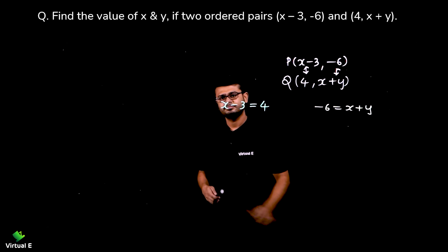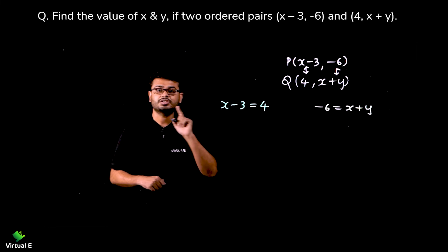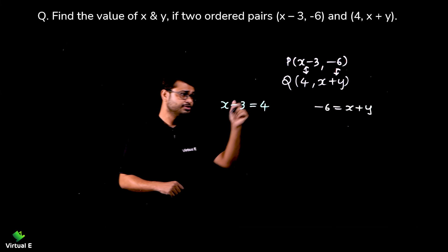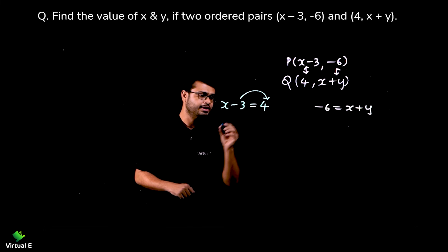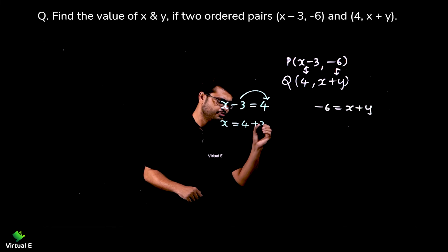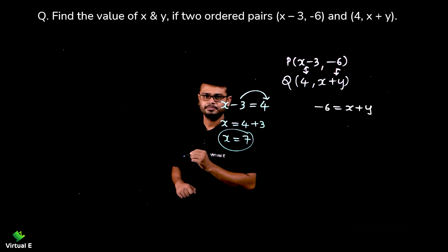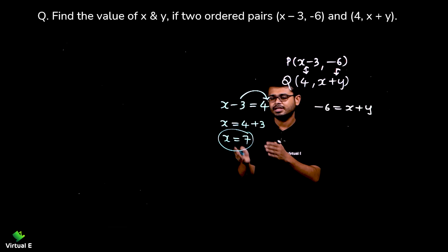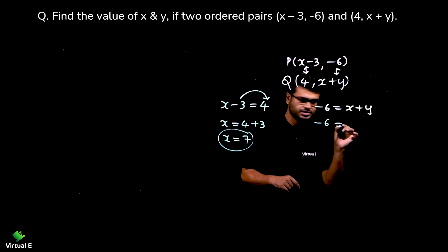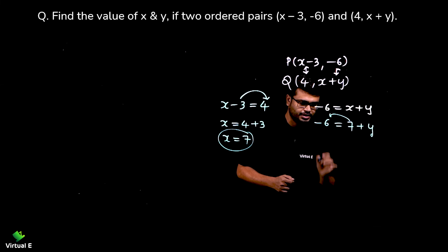Since the pair is equal, x-coordinates are equal and y-coordinates are equal. Always start with the equation that has only one variable — it's easier to solve. From x minus 3 equals 4, shifting minus 3 gives x equals 4 plus 3, so x equals 7.